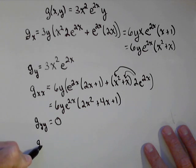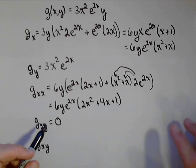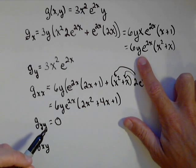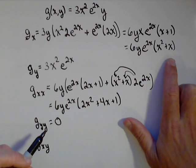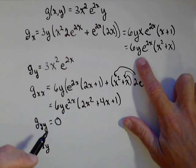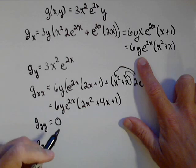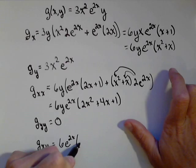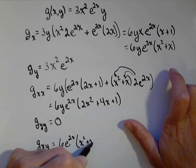Now, let's look for our mixed order partials and make sure they come out the same. G sub x with respect to y. So, here was G sub x. Now, we're taking the derivative with respect to y, which makes everything in terms of x a constant. The derivative of y is one, so we'll have 6e^(2x) (x² + x).